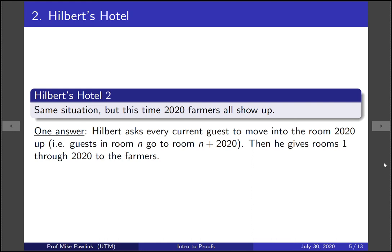Yeah, this time Hilbert asks every current guest to move into the room 2020 up from them. So guest in room n goes to the room n plus 2020. Then he gives the rooms 1 through 2020 to the farmers sort of arbitrarily, however he wants.